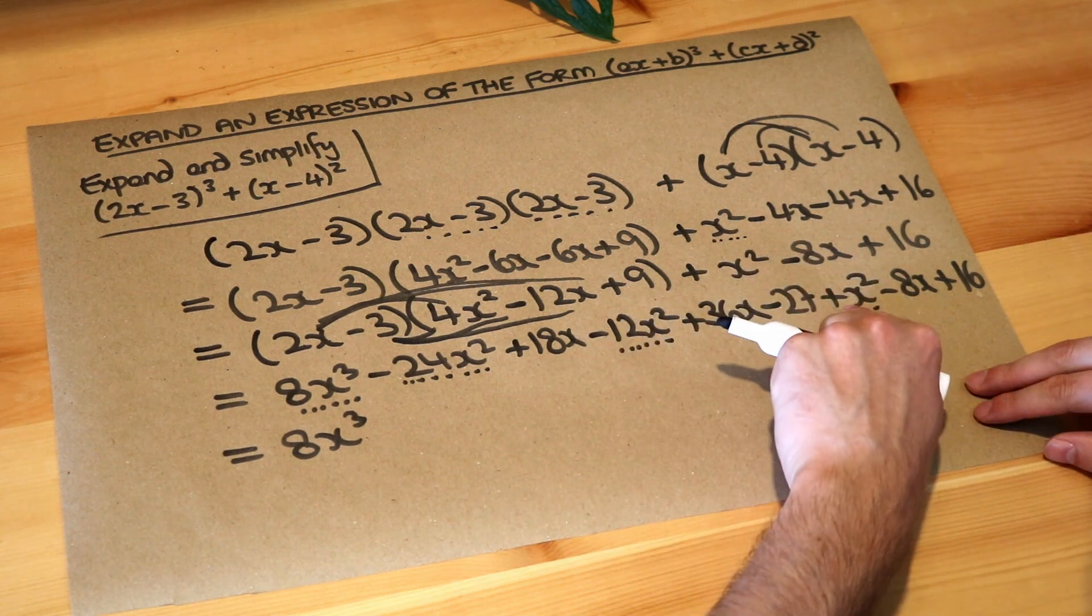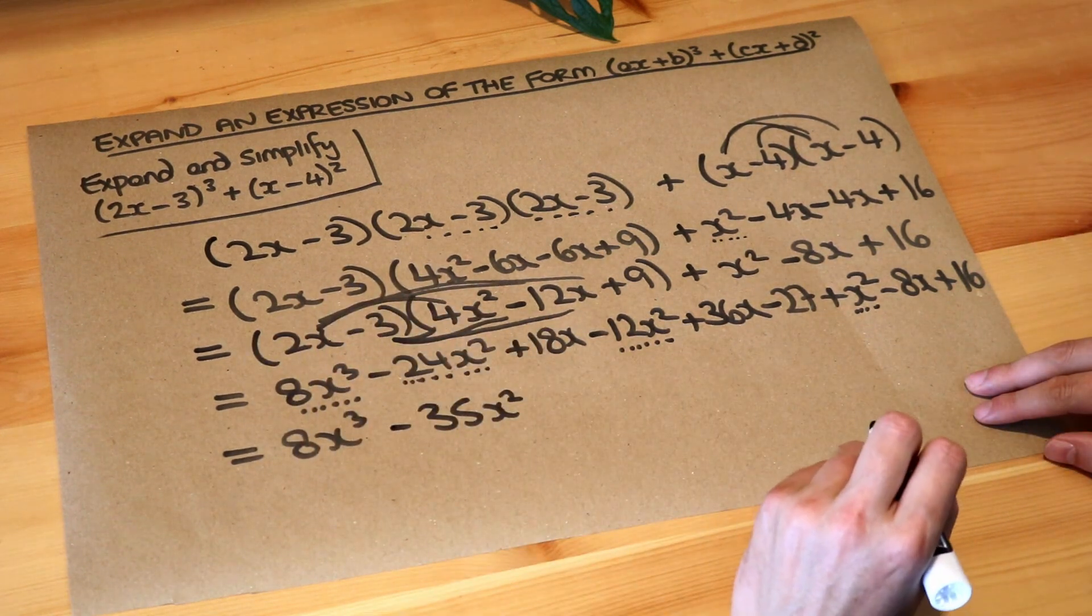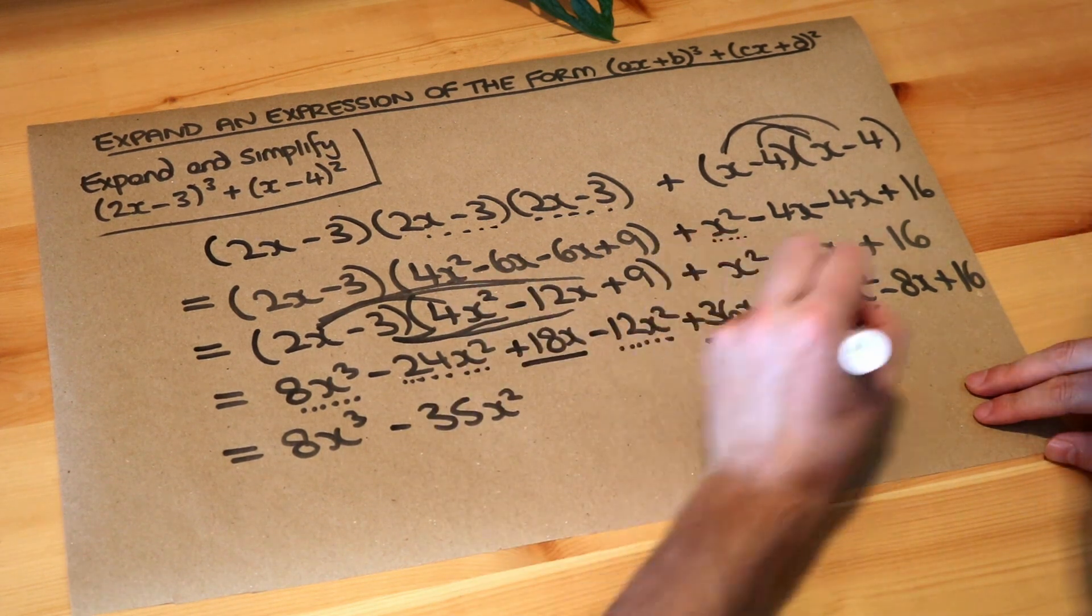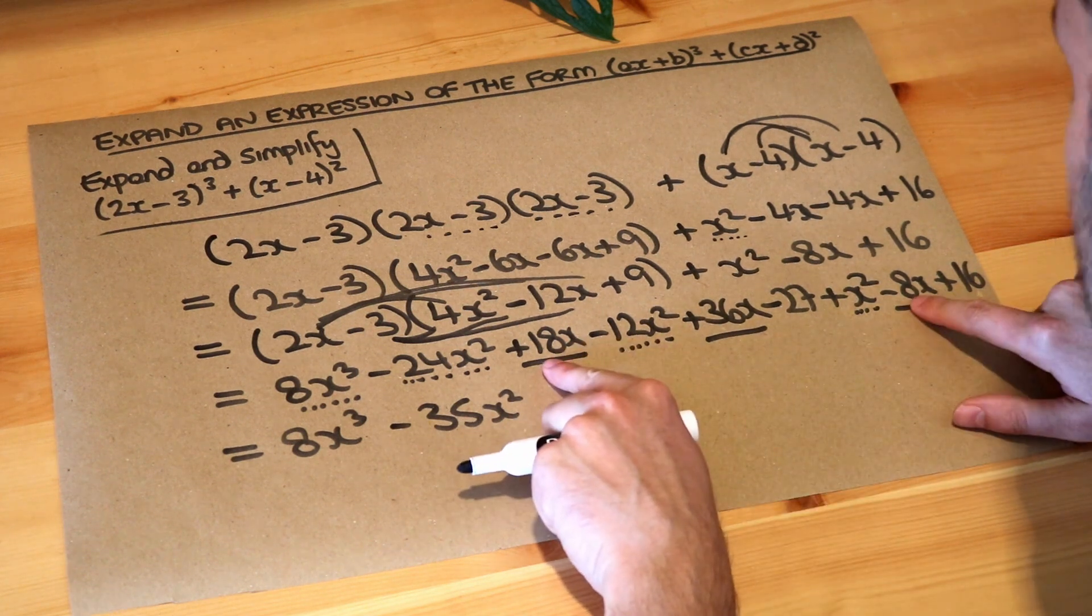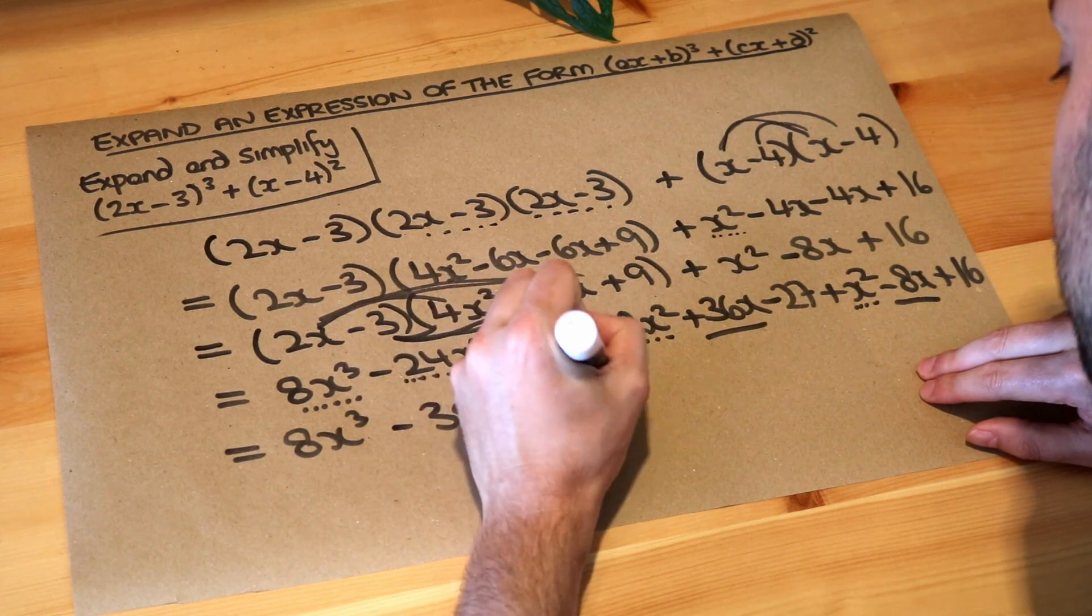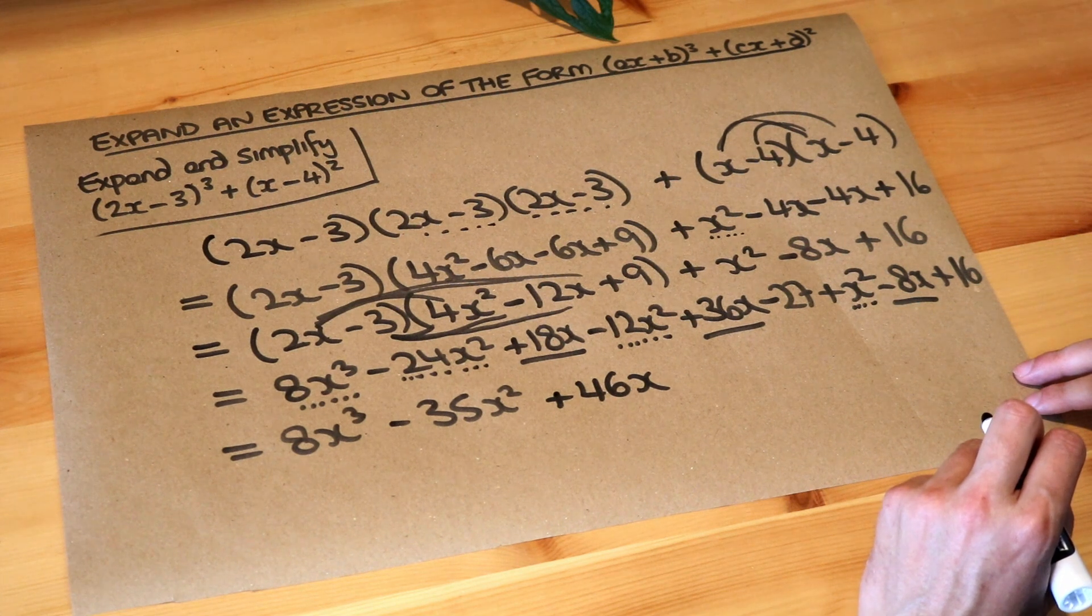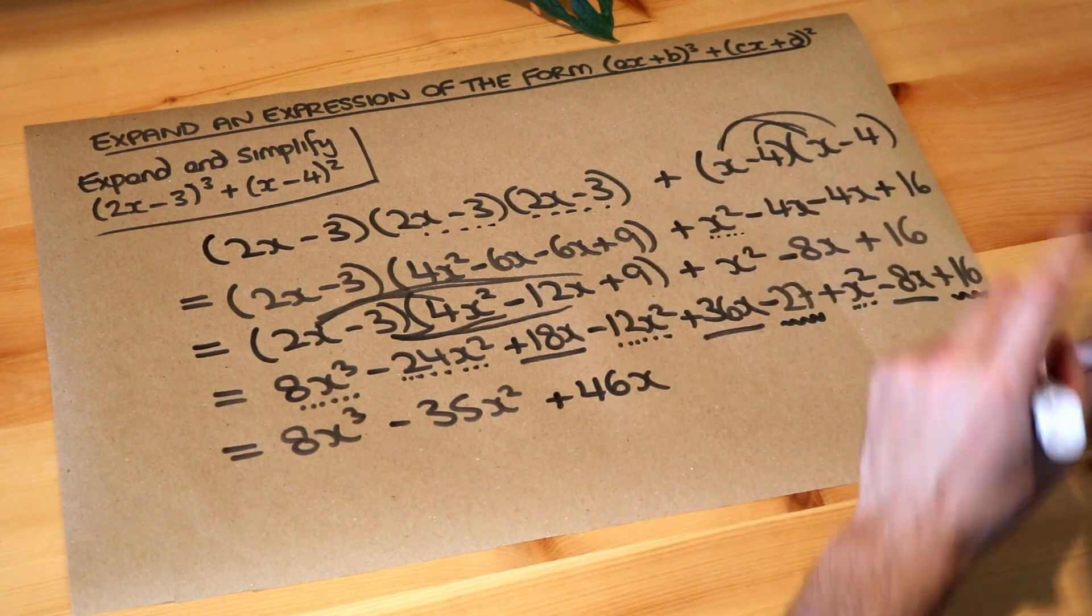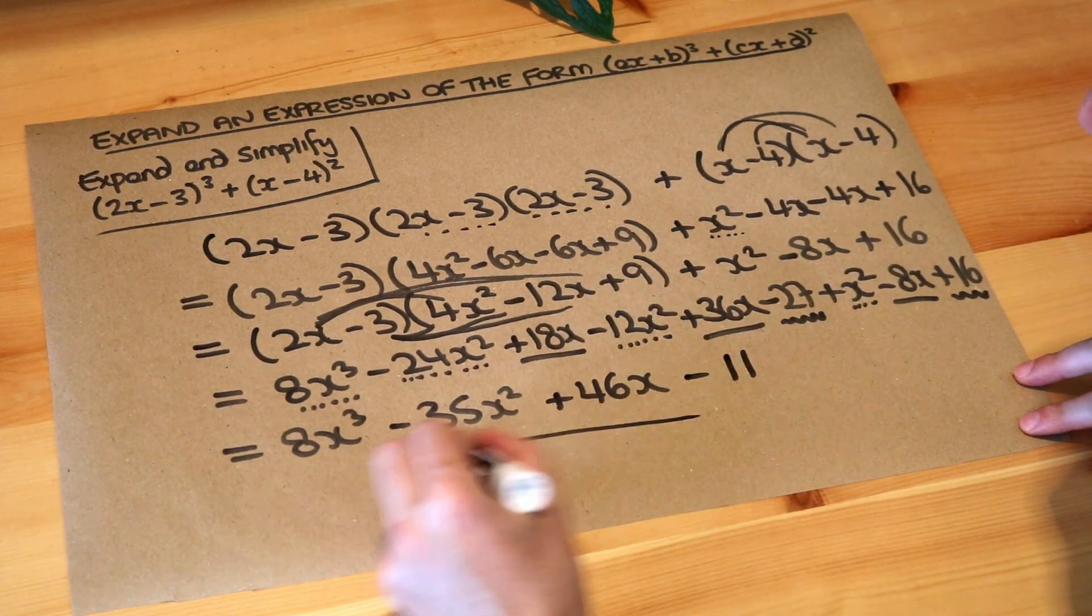Now what about the x terms? We've got the 18x, the 36x, and then -8x. Well 18 minus 8 is 10, plus 36 is +46x. And finally we've got the constant terms, the terms without the x: we've got -27 and we've got the +16, well that's -11. So we've got -11, and that gives you the final answer: 8x³ - 35x² + 46x - 11.